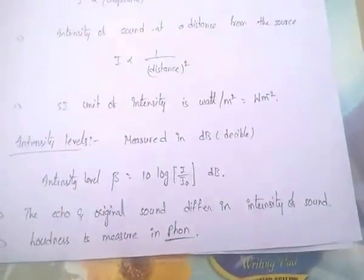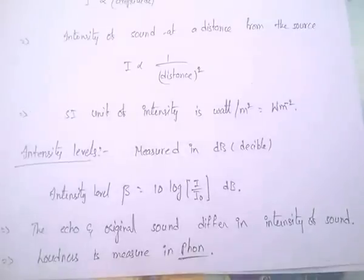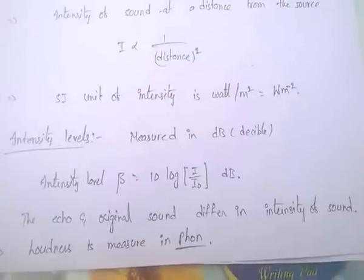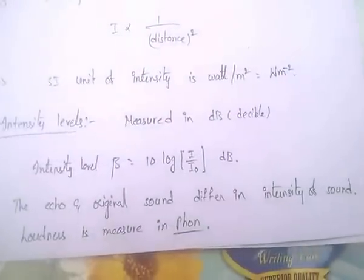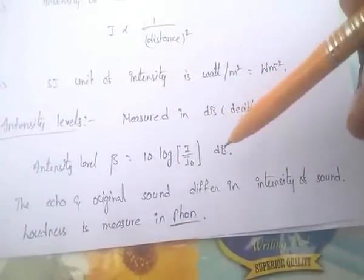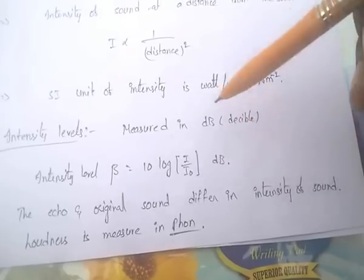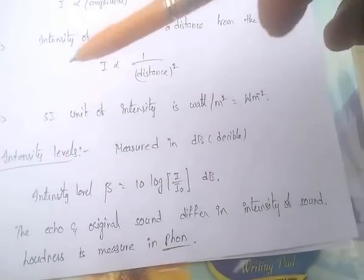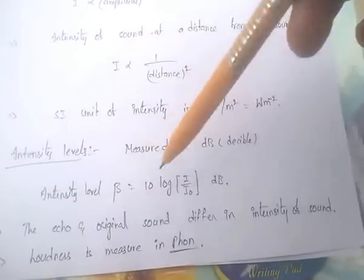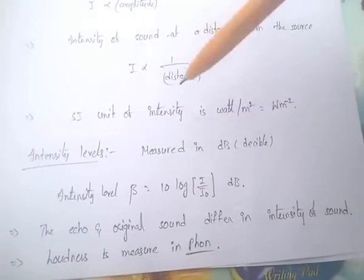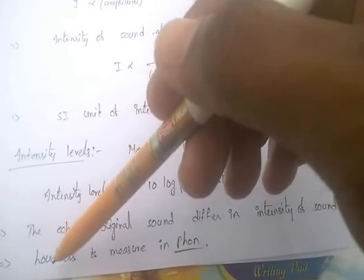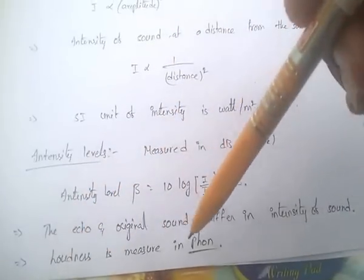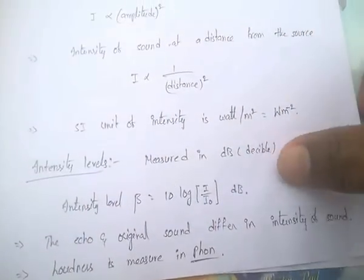Intensity level is measured in decibels (dB), with the formula β = 10 log(I/I₀). Echo and original sound differ in the intensity of sound. Loudness is measured in phon — this is a very important point.